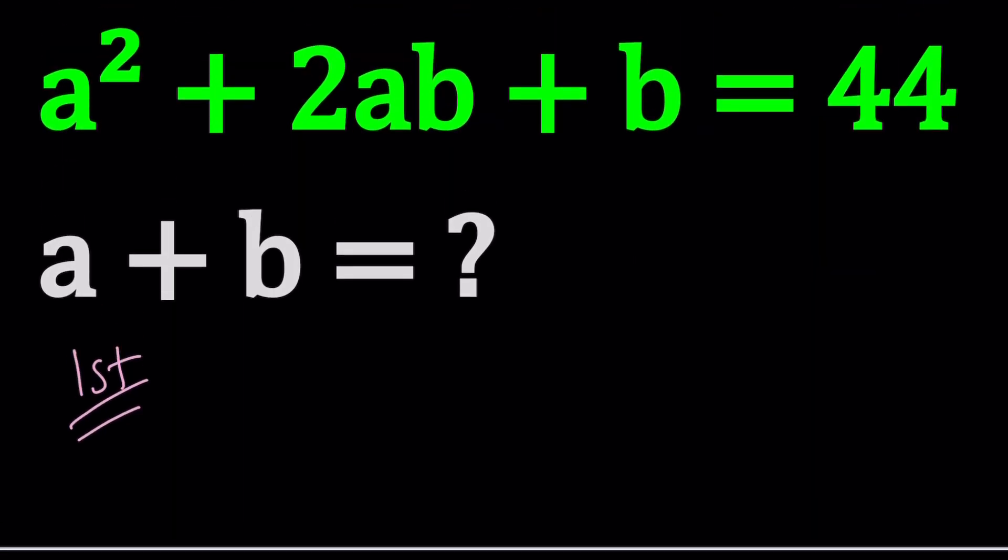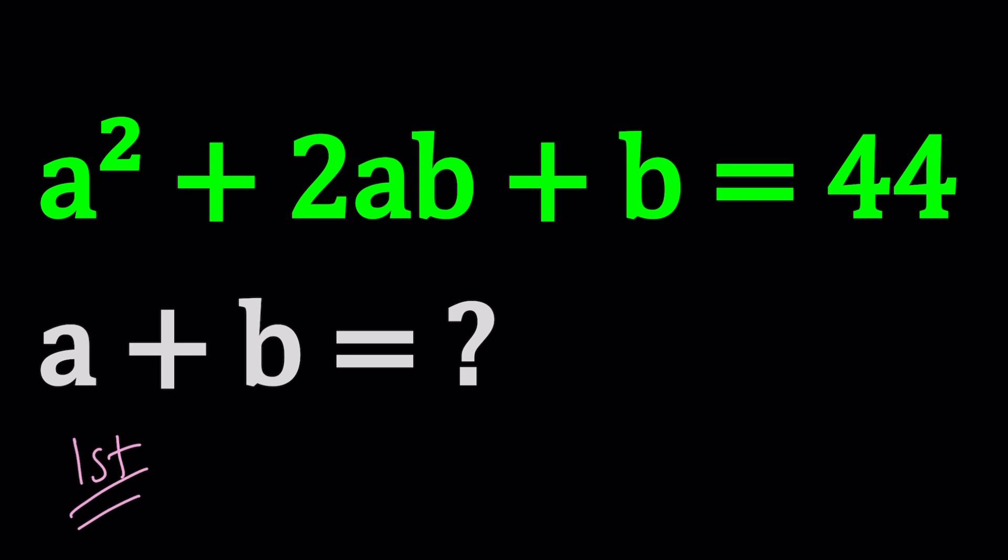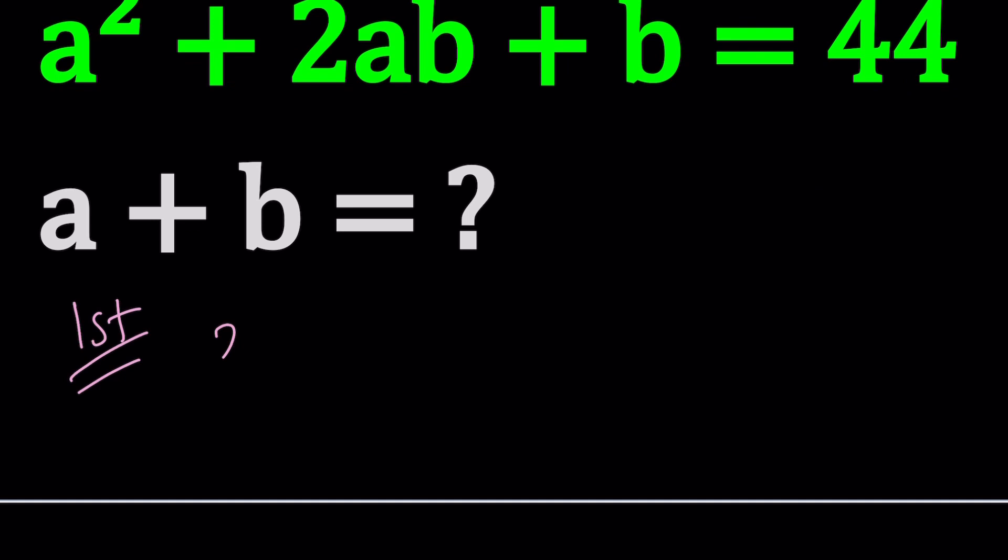We have a² + 2ab + b = 44. First of all, I'm going to multiply both sides by 2 to make this a little bit more factorable. And that's basically motivated by the coefficient of ab, which is 2. After I do this, I'm going to try to factor this. Obviously I can't factor completely, but I can factor partially.